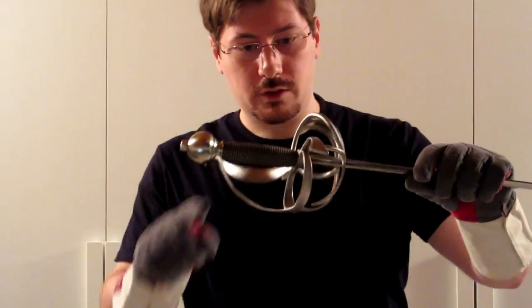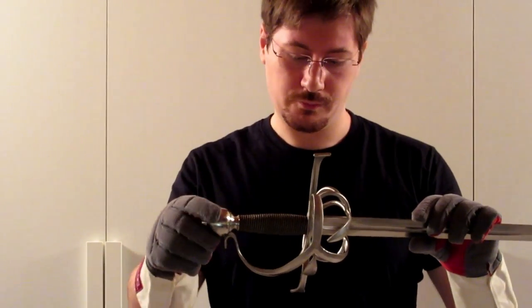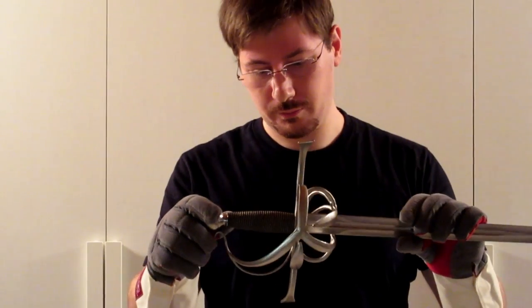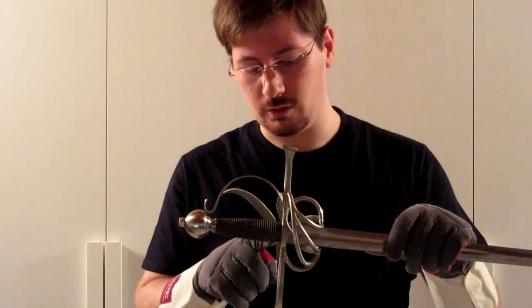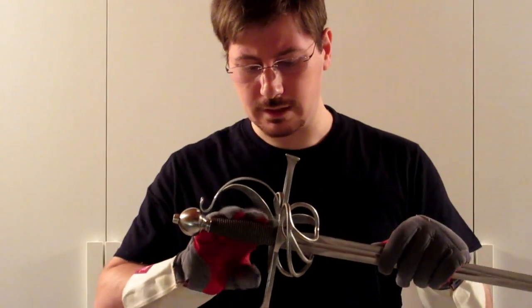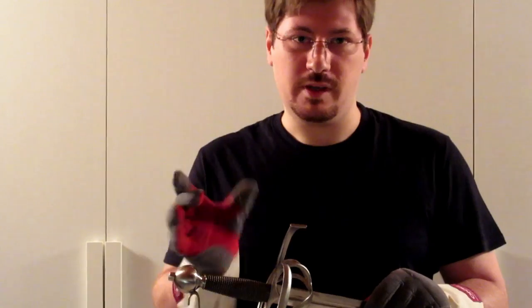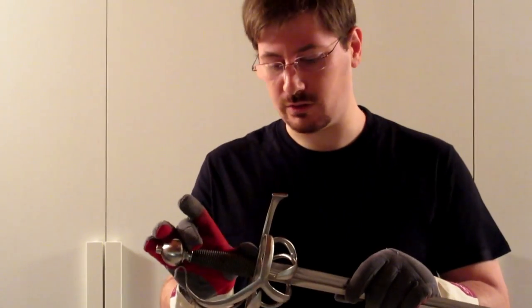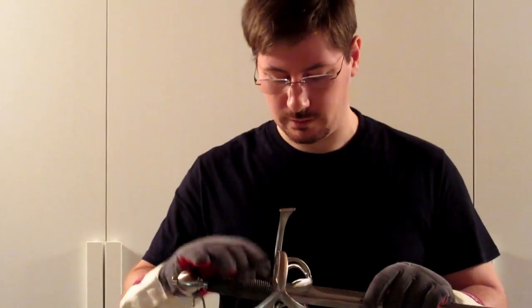As for the grip, I chose to replicate wire twisted, because almost every original I saw was made like that. And I think that it also helps with the balance, because basically you add metal also on the hilt, so it helps to have the right feel when you swing, when you cut.